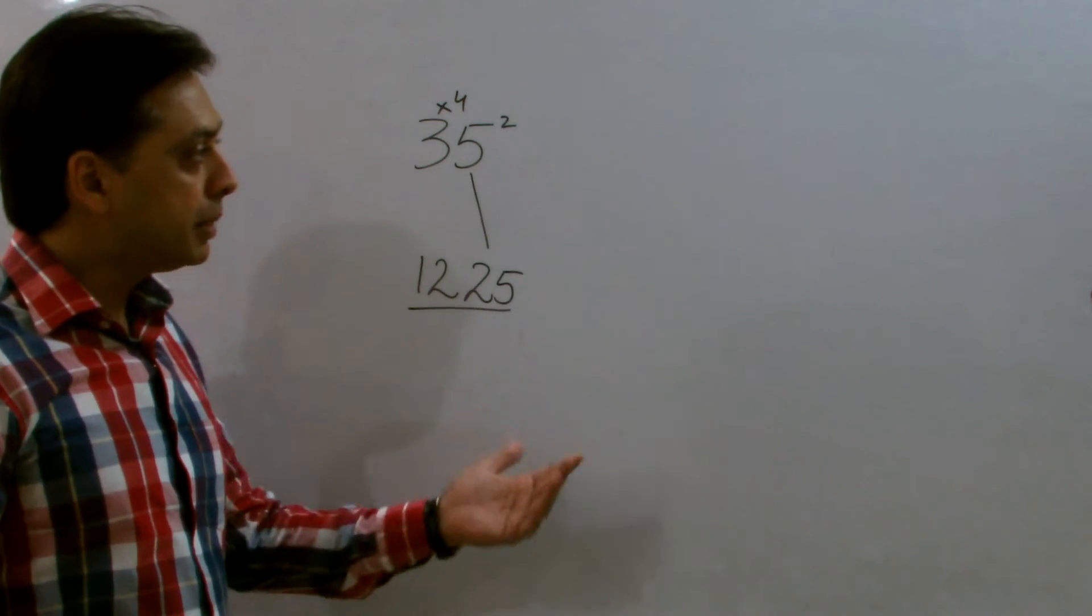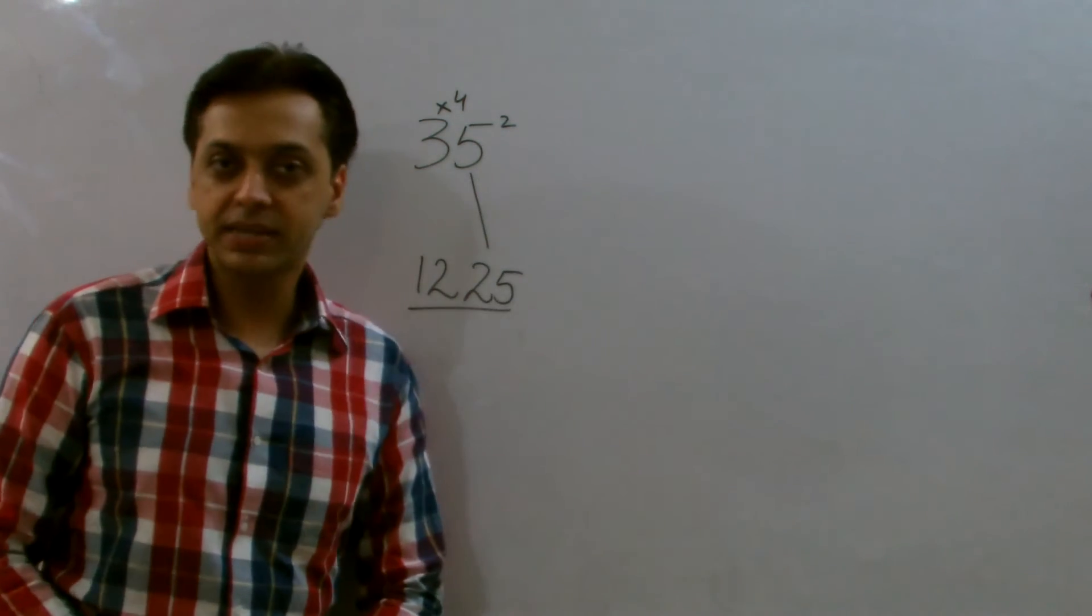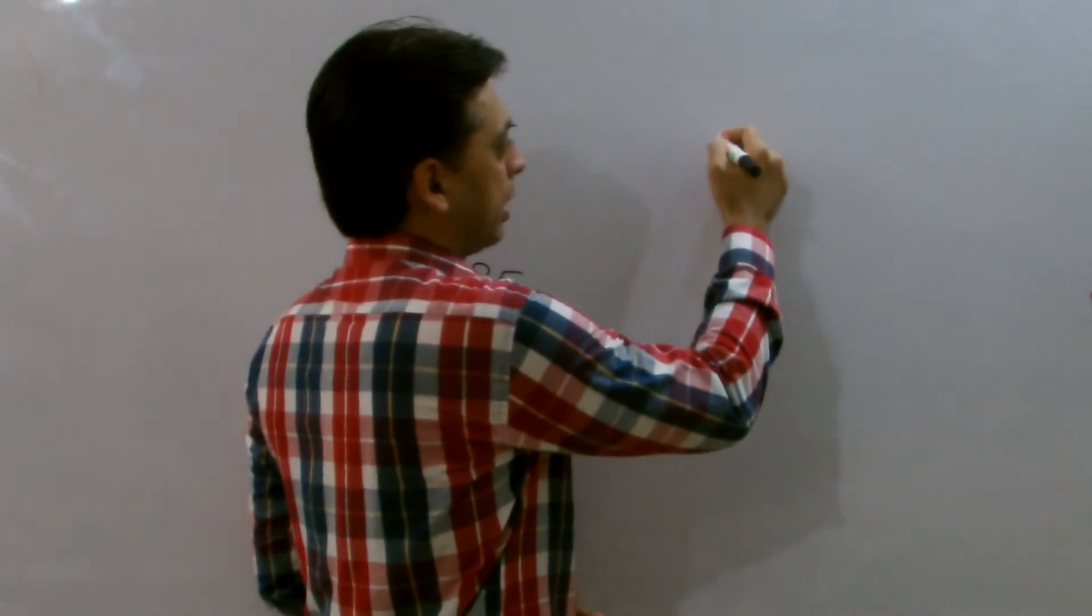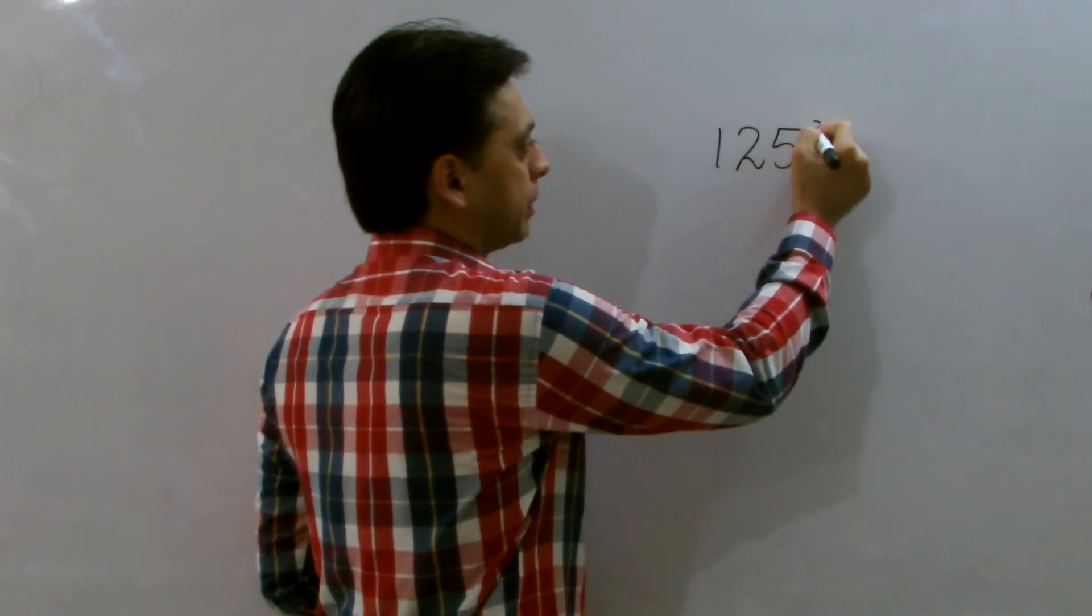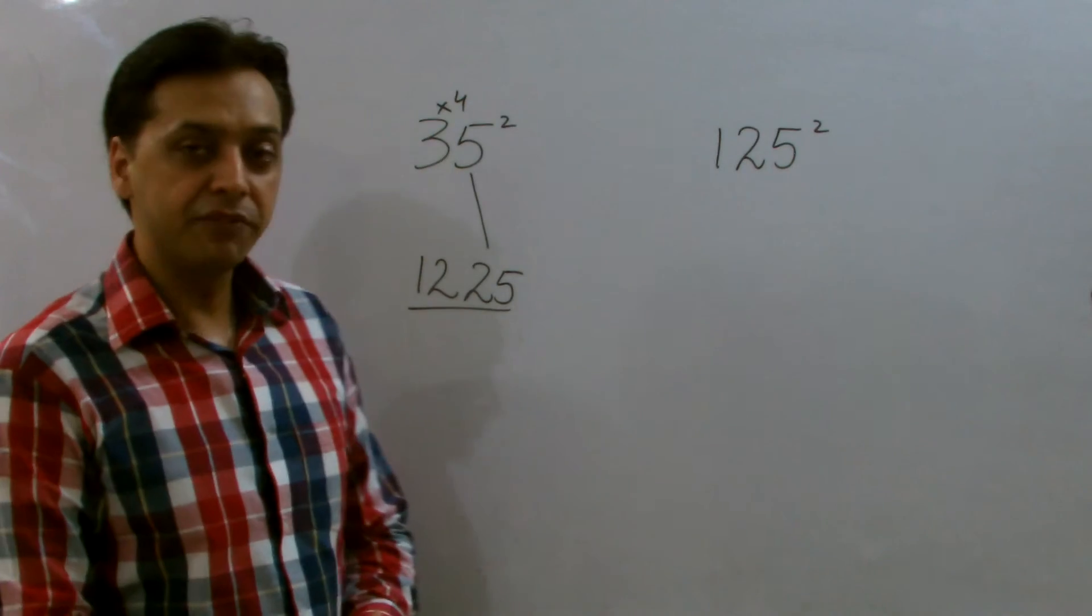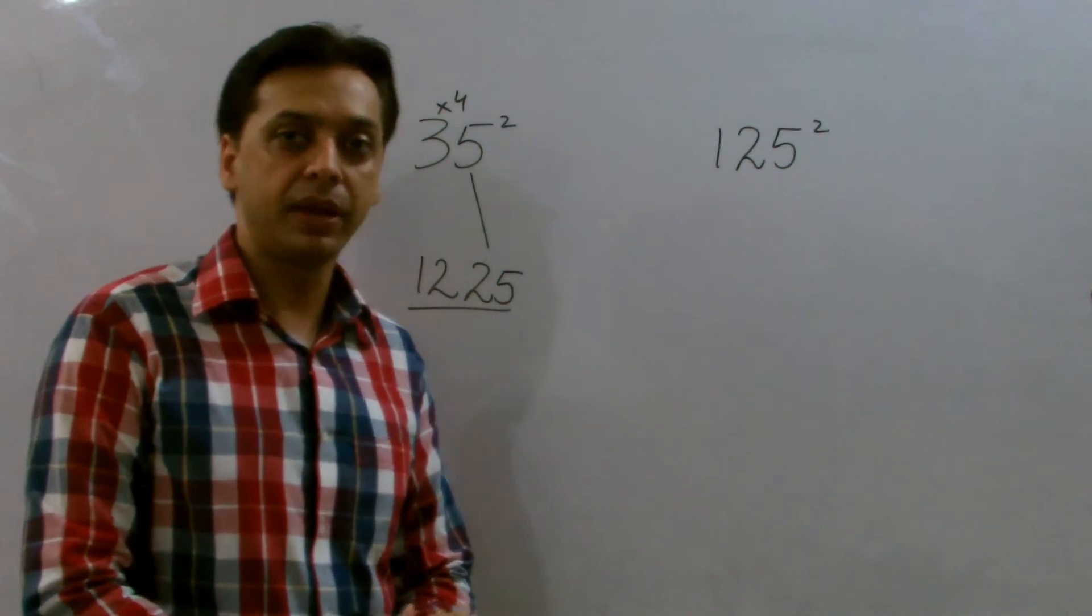We can consider a bigger number and we'll get the answer the very same way. For example, 125. If you're looking for the square of 125, you can find the answer the very same way.